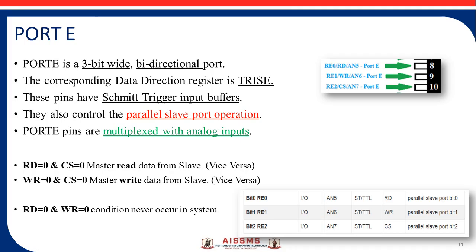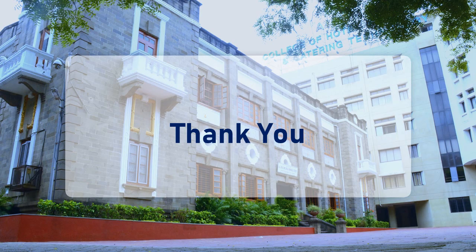These read and write operations enable communication between master and slave devices, handled by Port E. RD0 and WR0 cannot both be active simultaneously — you cannot perform read and write on the same document at the same time, so this condition never occurs in the system. In this way, Port E provides these features. I have explained Port C, Port D, and Port E in detail. Links to previous videos are in the description box. Keep watching — thank you.